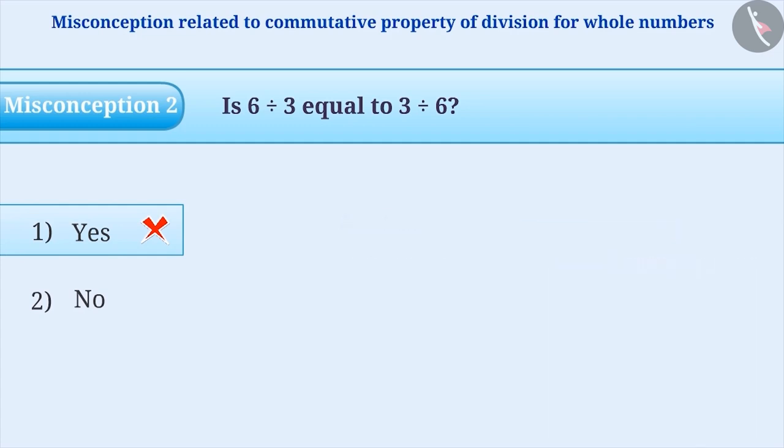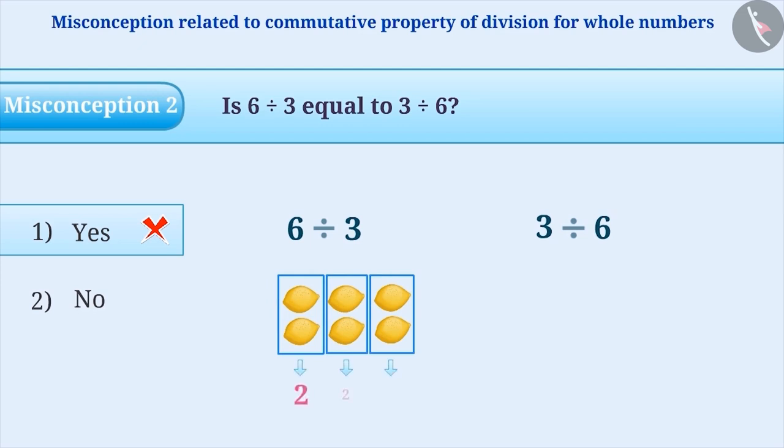To find the correct answer, we must compare the results of 6 divided by 3 and 3 divided by 6. Let's find the result of 6 divided by 3. Suppose you have 6 lemons. If you wish to make 3 equal parts, then each part will consist of 2 lemons. So, the result of 6 divided by 3 will be 2.